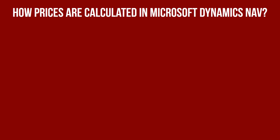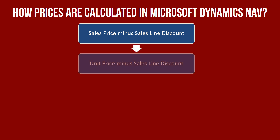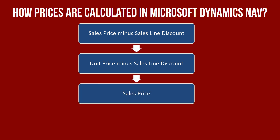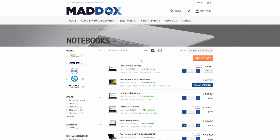Let's summarize. First, the system checks if there is a sales line discount and applies it to the sales price if it exists, or to the unit price if there is no sales price. If there is no sales line discount, the system will search for a sales price. If there is no sales price that matches the criteria, the unit price will be used for an item. SANA does not have any influence on how prices are calculated — the default Microsoft Dynamics NAV logic is used. In SANA, you can only control which prices and discounts you want to show to your customers in the web store.